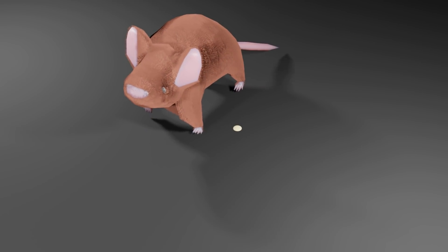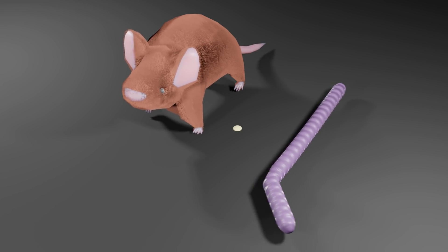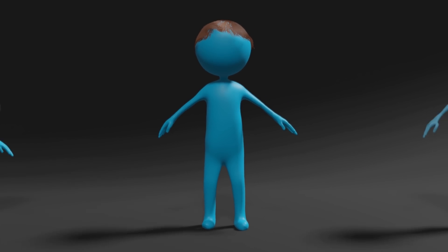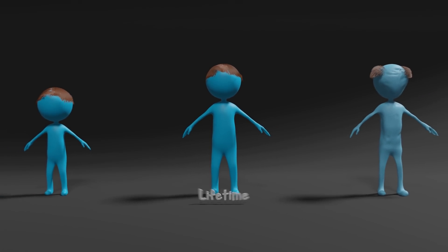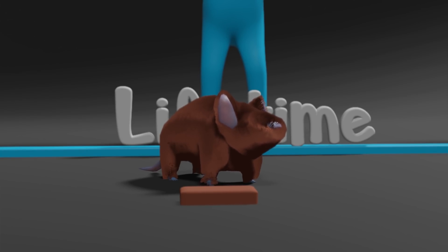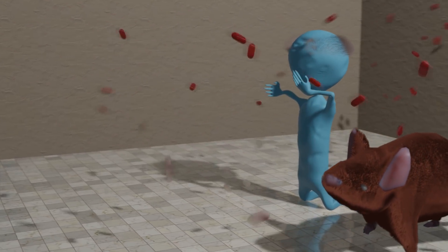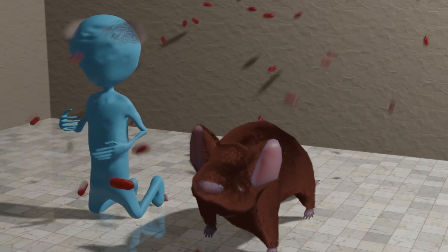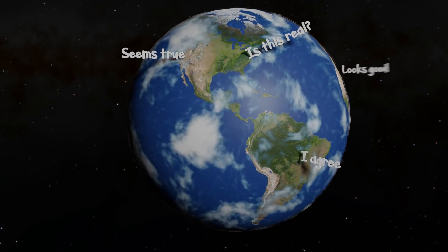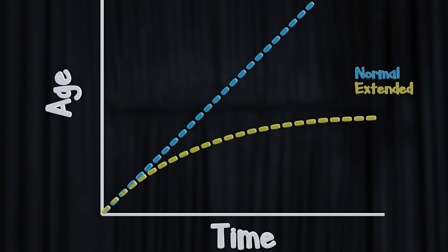But mice, yeast, and roundworms aren't humans. These things take time, and good science needs good data. If we want to assess how these practices affect humans, we need to see its effects over a lifetime or a significant portion of it. Mice live two to three years, so it's a lot quicker to see results with them. That doesn't mean there aren't currently studies of the very same molecules given to mice being given to humans right now — because there are. And so far the data is very promising. A good scientist will never speak fact until it's been replicated multiple times in different settings, but it's looking like we can drastically reduce a person's aging today.